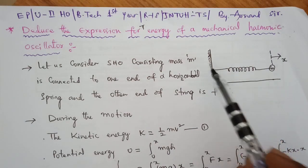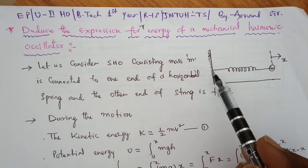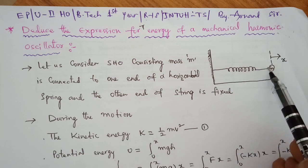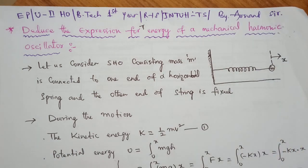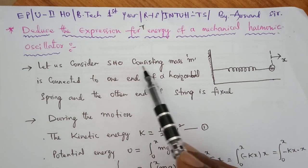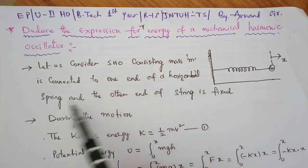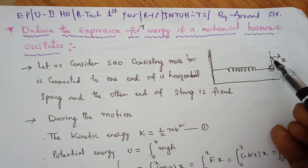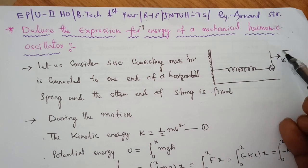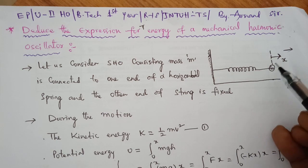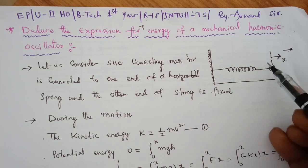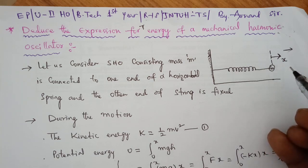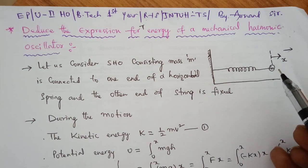Let us consider a rigid support, and one end of the spring is attached to the rigid support. Another end of the spring is tied with the mass of the body. Consider a simple harmonic oscillator consisting of mass M connected to one end of a horizontal spring, and the other end of the spring is fixed. When a force is applied on the spring to the right-hand side, it gets some displacement. Then it comes back to the original place due to the restoring force of the spring. As this phenomenon takes place, it moves in to-and-fro motion from the mean position — so we say it is executing simple harmonic motion.